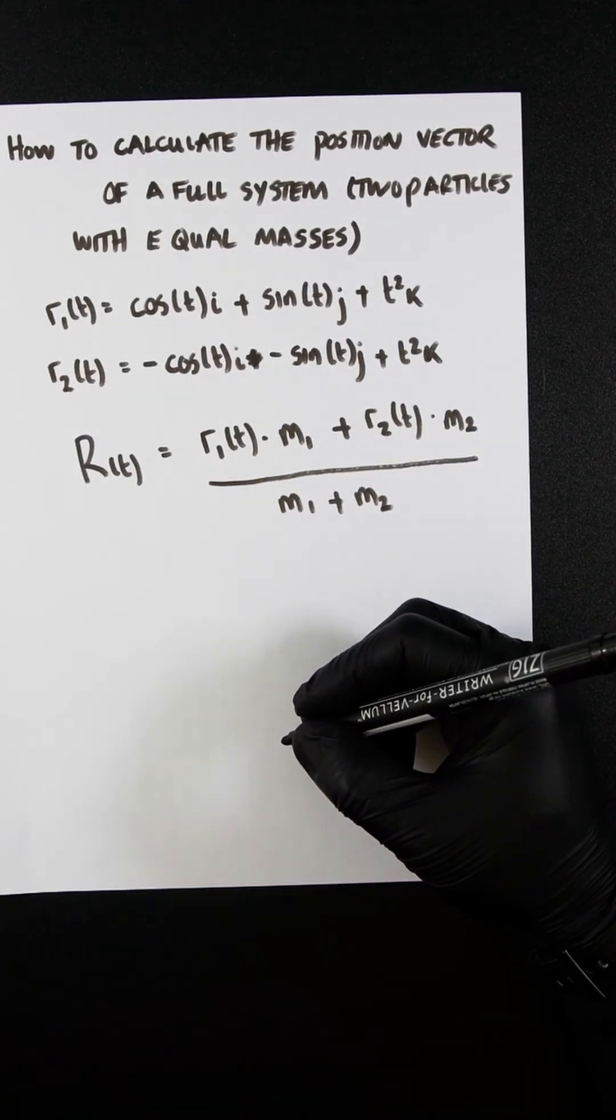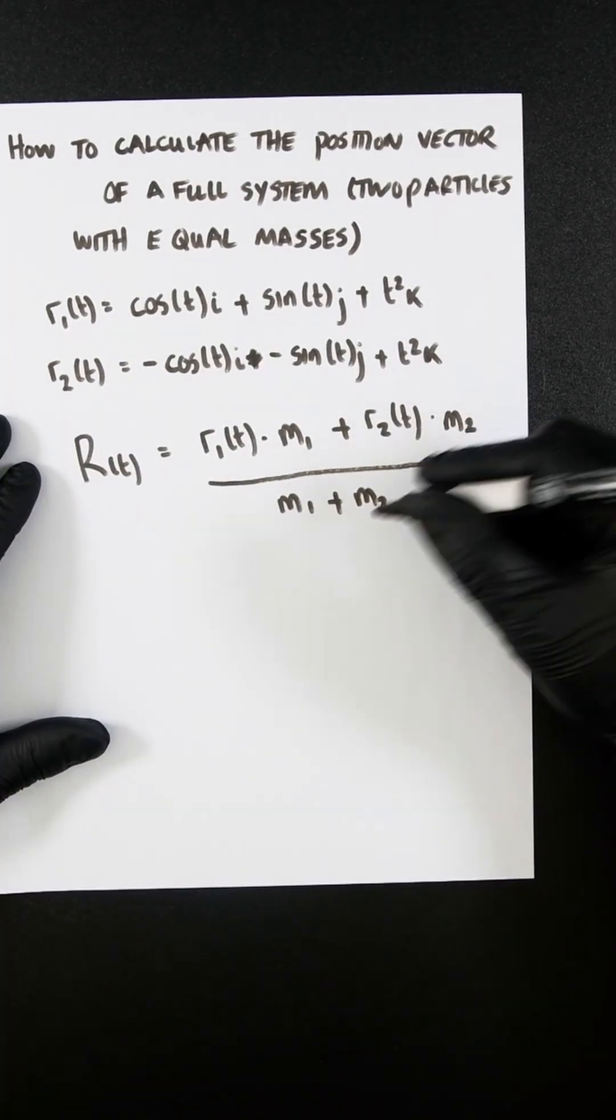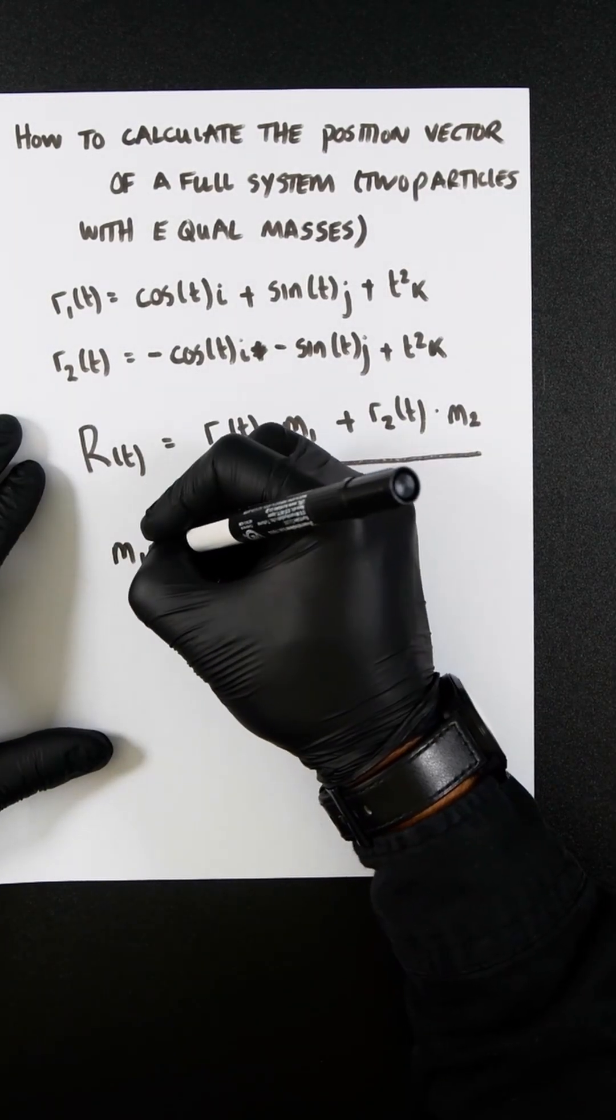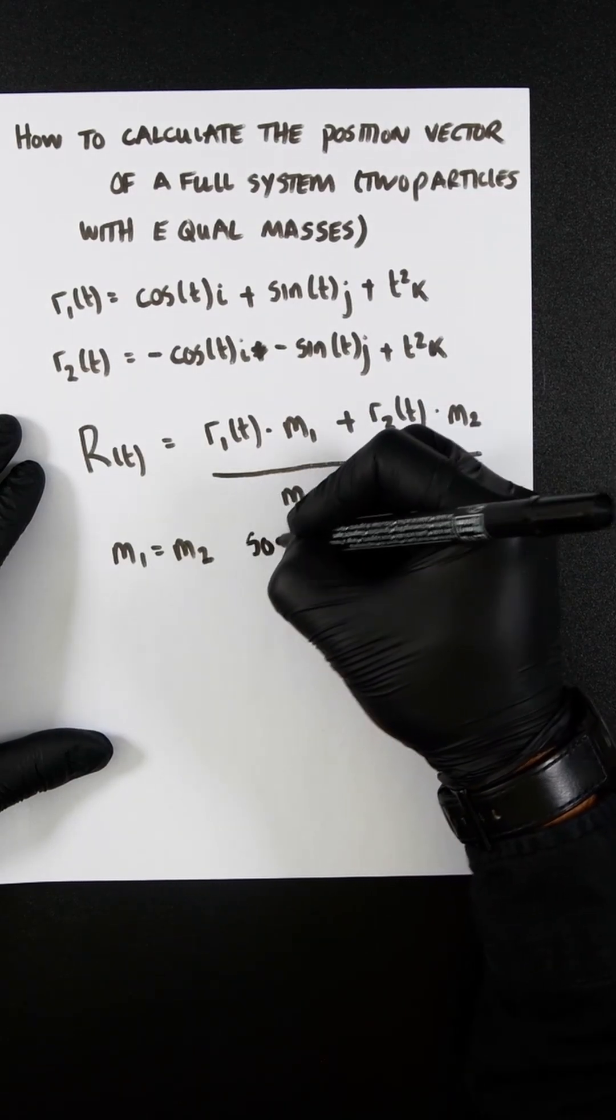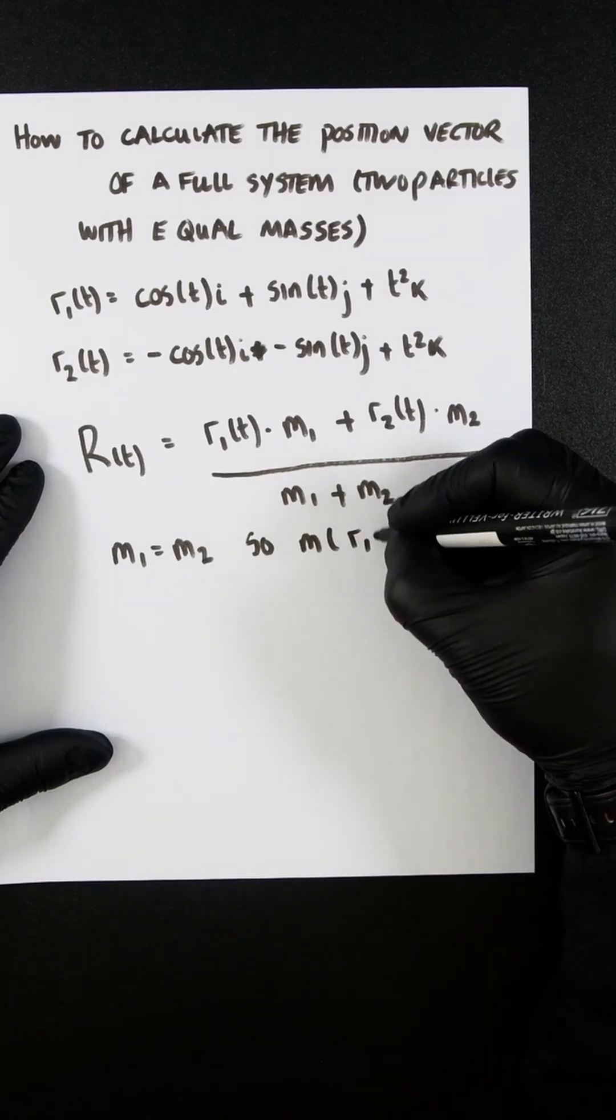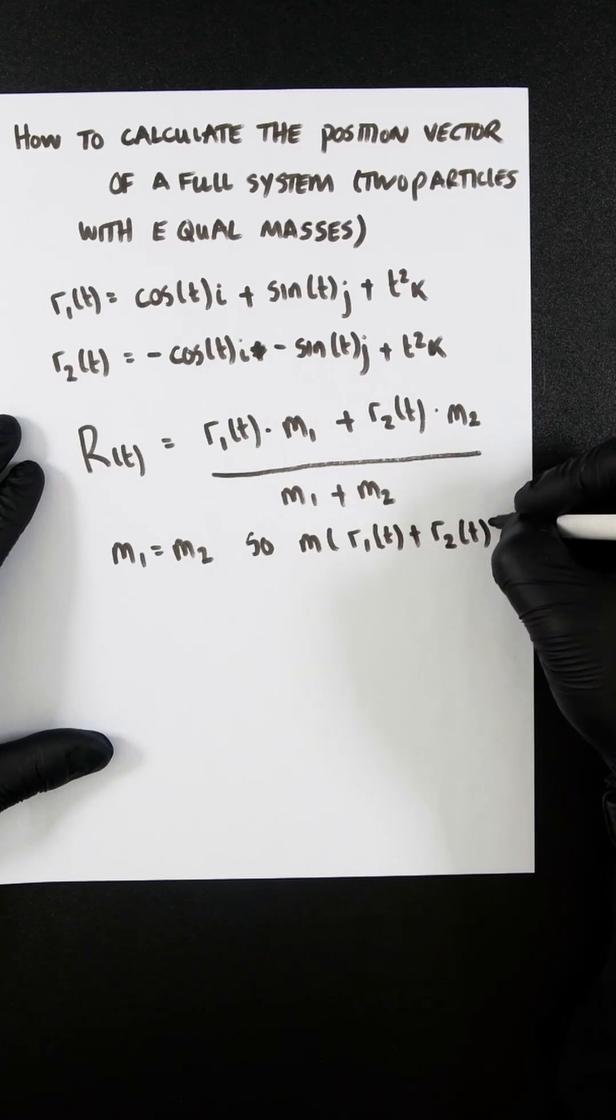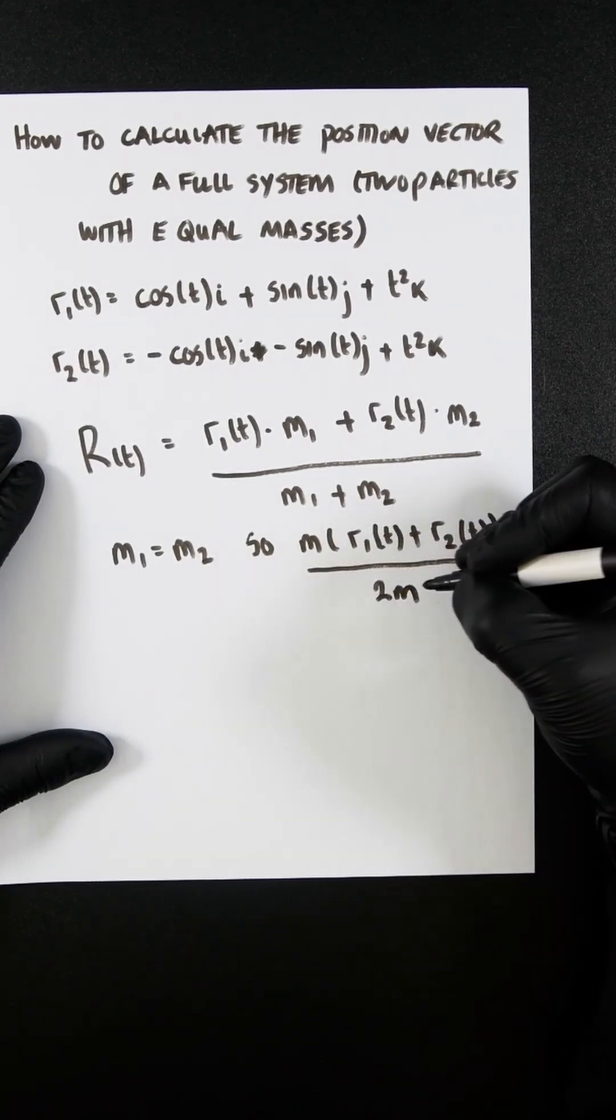We know that m1 equals m2, so we can simplify this to have m times r1(t) plus r2(t) divided by 2m.